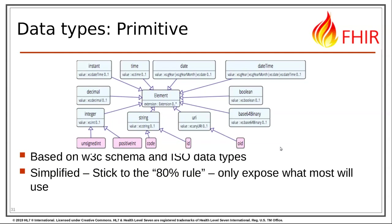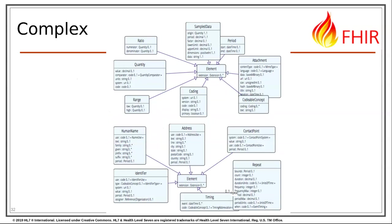Inside a resource, we use data types to say lots of things about, for example, a patient. In FHIR, we have a set of primitive data types that allow us to convey things like numbers, dates, times, and Boolean values — true or false. We also define a set of complex data types, which are reusable units conveying information like a person's street address or a human name. A human name is not as simple as just a string of text — somebody might have a given name, multiple family names, or names used in different contexts. One complex data type I'll point out is the codable concept, which we'll discuss in more detail.